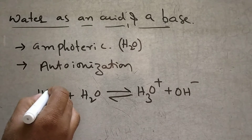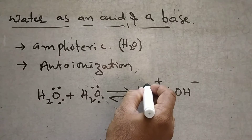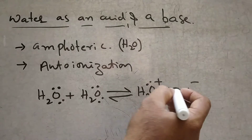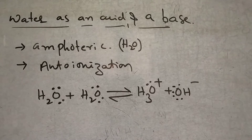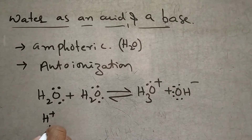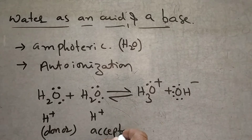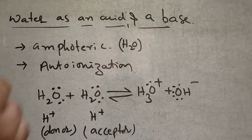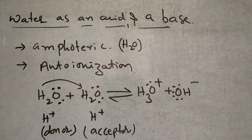Water naturally contains two lone pairs of electrons and is ready to donate one lone pair of electrons. It is converted to only one lone pair. OH⁻ ion contains three lone pairs of electrons, which is why it carries a negative charge. This is self-ionization. One water molecule is the H⁺ ion donor and the other is the H⁺ ion acceptor. The proton donor we call an acid, and the proton acceptor we call a base.